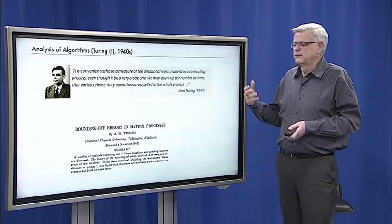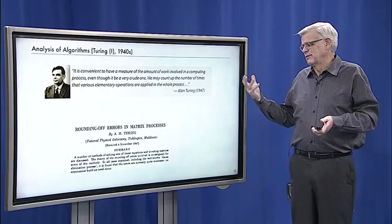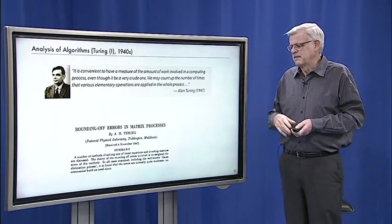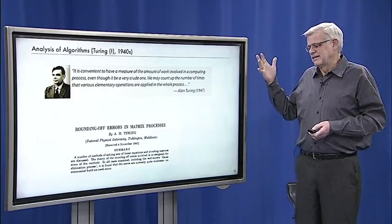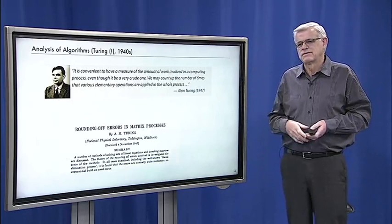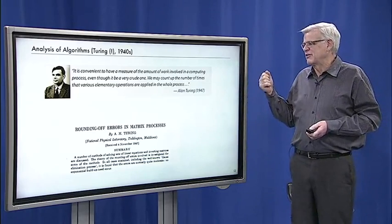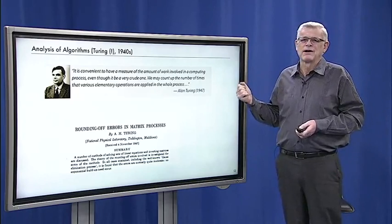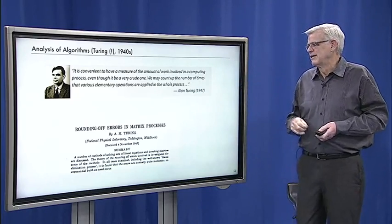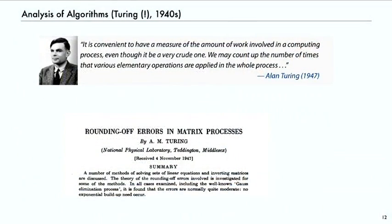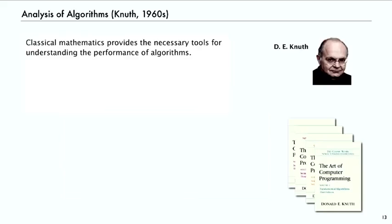Even Turing, who is the founder of theoretical computer science, could see the importance of these kinds of practical questions. We want to have a measure of the amount of work involved in the computing process, even though it might be a crude one. We count up the number of times that elementary operations are applied in the whole process in order to figure out how much work it's going to take to help in designing efficient computation.